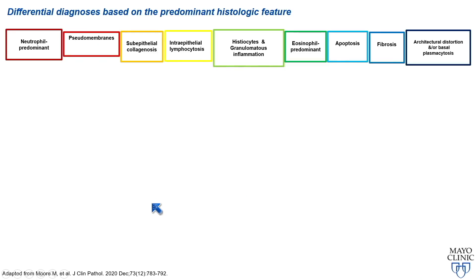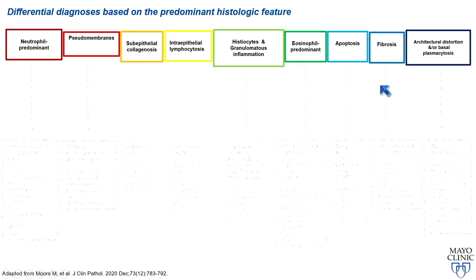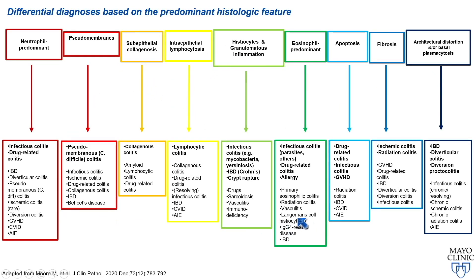This is a busy slide, and I don't mean to go over it in great detail, but just to give you a sense of how to approach colitis. You can think about the predominant feature at the top — we'll spend most of the time talking about neutrophil-predominant patterns, but there are other predominant patterns you can see in the colon. Based on the predominant histologic feature, you can generate a most likely cause and differential diagnoses. A review article published a few years ago highlights some of the challenges and helps narrow things down when you see a predominant pattern of injury.